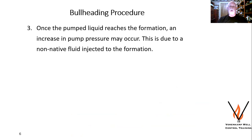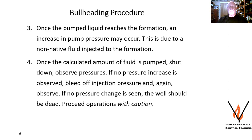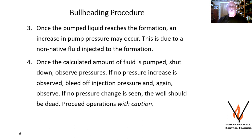Once the pump liquid — the kill fluid — reaches the formation, there's usually an increase in pump pressure. This is due to the kill fluid reaching the perfs. It's a different density than the formation fluids generally, and you get a rise in your back pressure. We've got to watch that and make sure that rise doesn't occur because of plugging. Once we've calculated the proper amount of fluid, shut down, observe the pressure so that nothing is changing. If it doesn't change, we can bleed the excess pressure off, bring it down to zero, and then observe the well again — make sure she's not flowing. Then we can go do the remedial work we were planning on doing originally. The next slide gives you an idea of how to track those pressures and line them up for a bullhead kill.